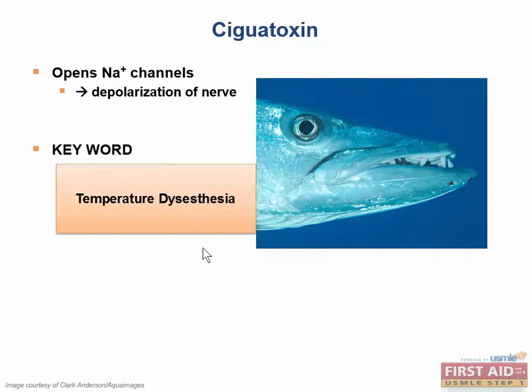Ciguatoxin poisoning is going to present with temperature-related dysesthesia. Temperature-related dysesthesia is the sensation of touching a hot item and feeling a cold temperature, or touching a cold item and feeling hot. If you see this on test day, remember reef fish and ciguatoxin. The treatment for this is just supportive.